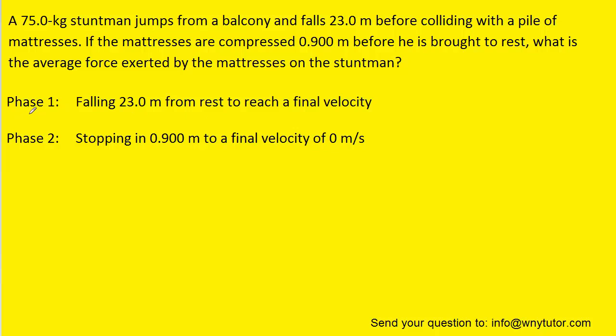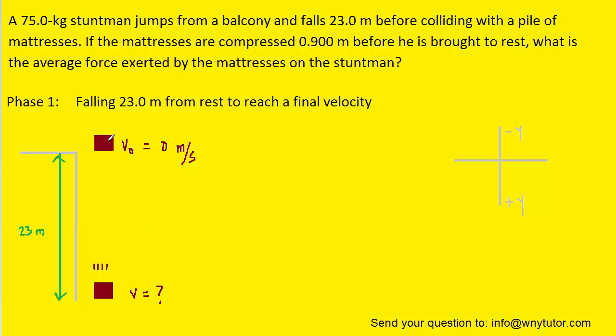We're going to explore phase one of the problem first. As noted in phase one, the stuntman, represented by this little square, initially has a velocity of zero meters per second. He then falls 23 meters and achieves a final velocity that we do not know. Notice that we have defined the downward direction as the positive y direction, so that's an important convention that we need to keep in mind.